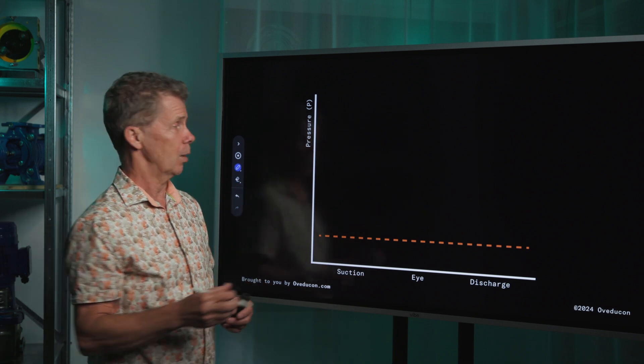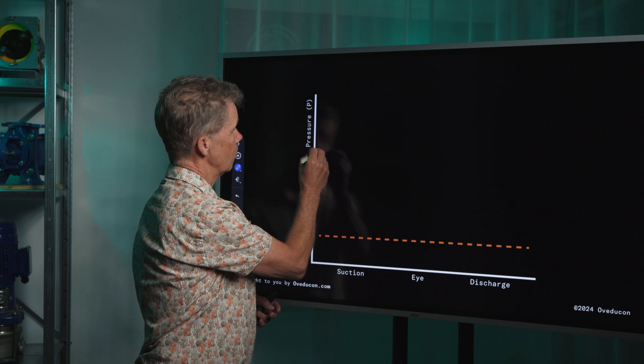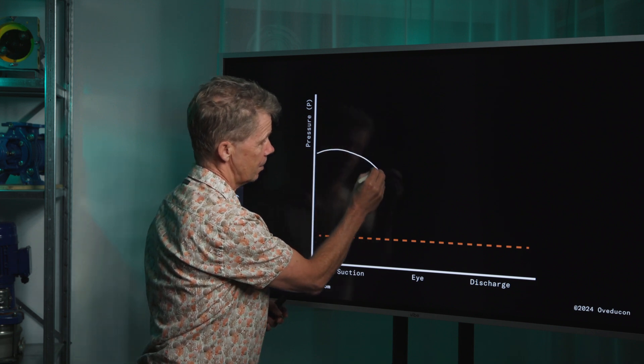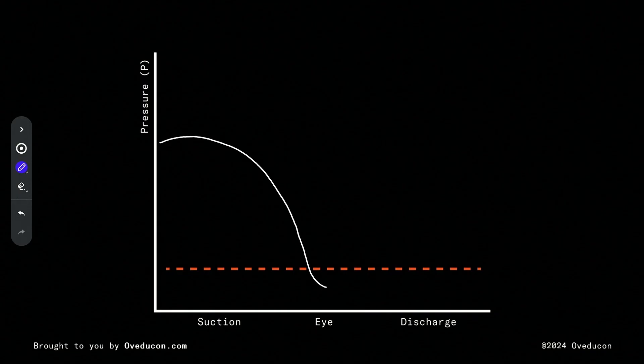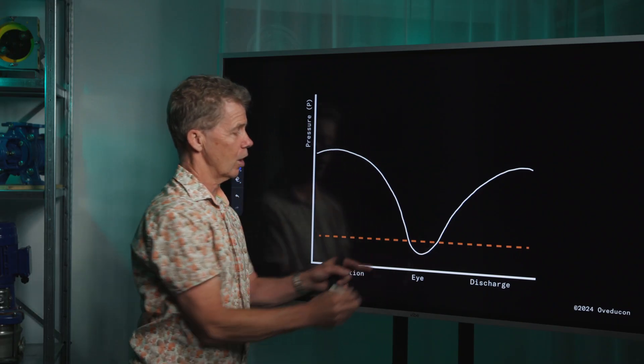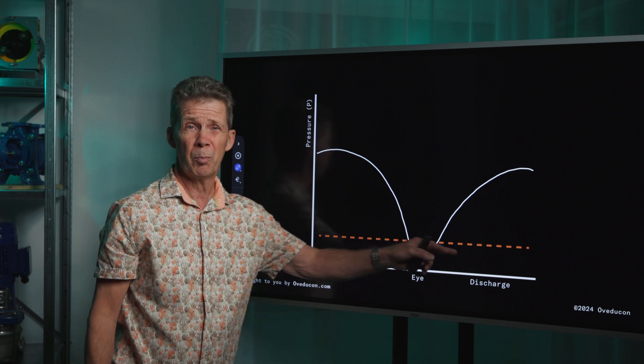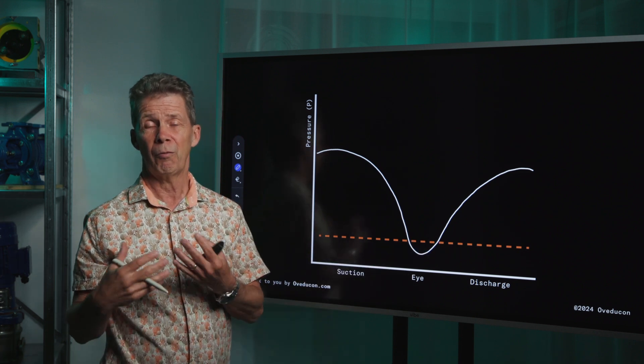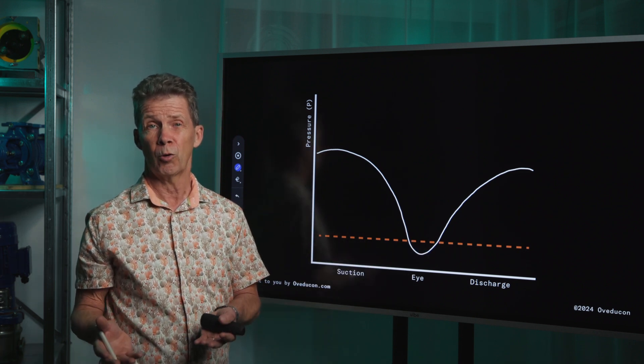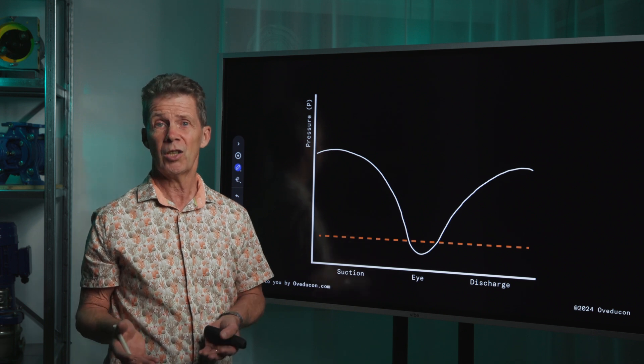But also another thing can happen. If you have a suction pressure line like this, the suction eye is coming below the vapor pressure line. Then vapor bubbles are formed and you will get cavitation. So we make an NPSH calculation to check if the NPSH available of the system is sufficient for the pump NPSH requirements.